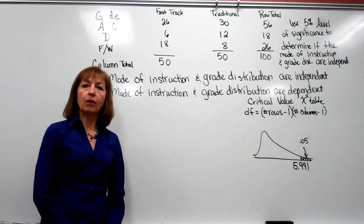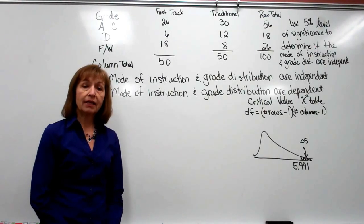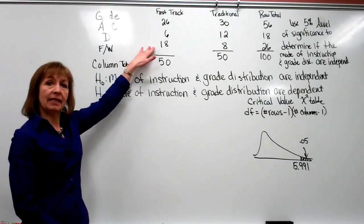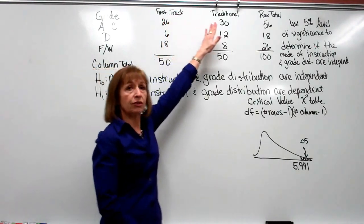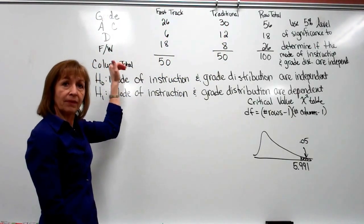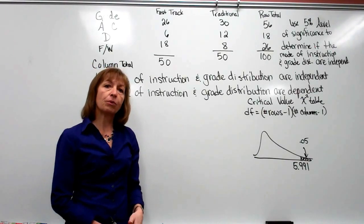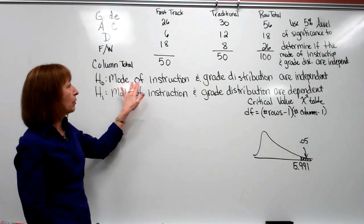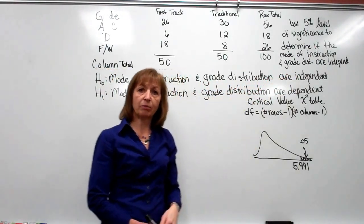In this segment we're going to look at one application of something called a contingency table. Here we have a contingency table where we have frequencies corresponding to two different variables: our mode of instruction for a class and a grade distribution. Our hypothesis test, called a test for independence, has a null hypothesis testing whether the mode of instruction and the grade distribution are independent.